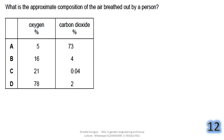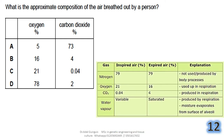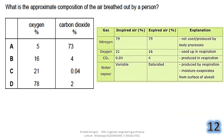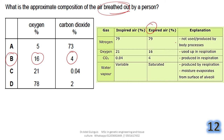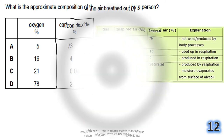Question 12: what is the approximate composition of air breathed out by a person? Oxygen in expired air is 16%, and carbon dioxide in breathed-out air is 4%. The answer is B.